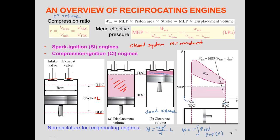We have a constant pressure that multiplies by the volume difference to give area one. This area one should be exactly equal to area two — the actual net work area under the P-V curve. When area one equals area two, the constant pressure used is the mean effective pressure.